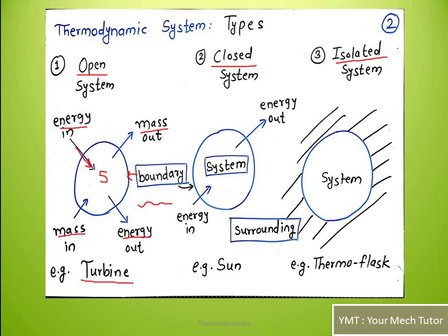The second type is the closed system. Here, in the diagram, this is the system, this is the boundary, and outside is the surrounding. If there is only energy transfer — some energy entering and some energy leaving — but no mass transfer, then that system is called a closed system. The classic example of a closed system is the Sun.